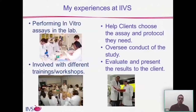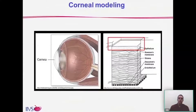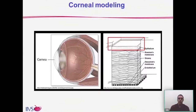When looking at ocular irritation, there are several different regions of the eye that can be affected — the iris, the conjunctiva, as well as the cornea. However, the cornea seems to be the primary area of interest. Even when looking at the Draize score, the majority of the score comes from effects seen on the cornea, so the cornea is of primary importance when evaluating ocular irritation.